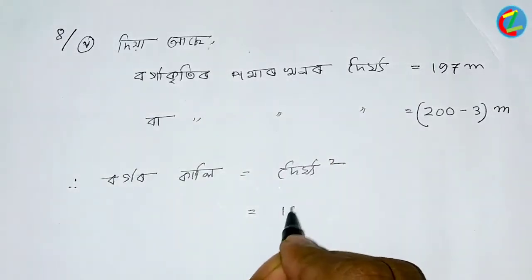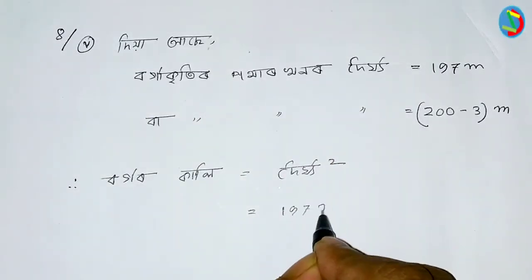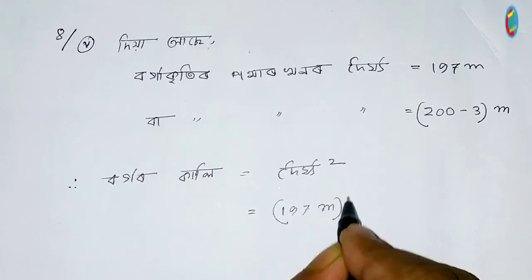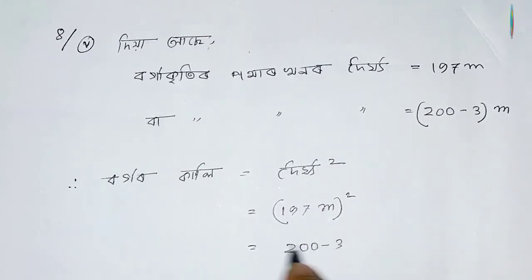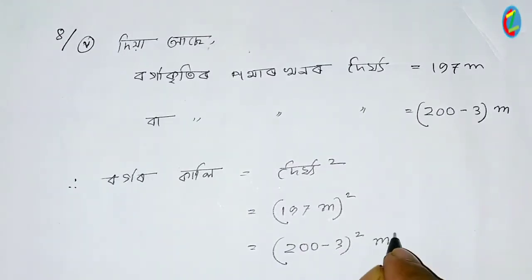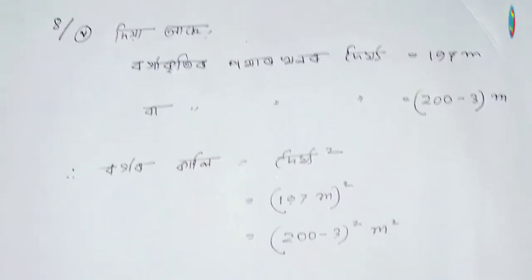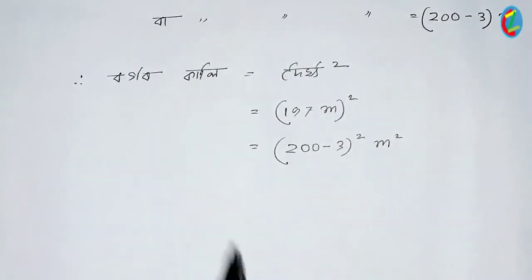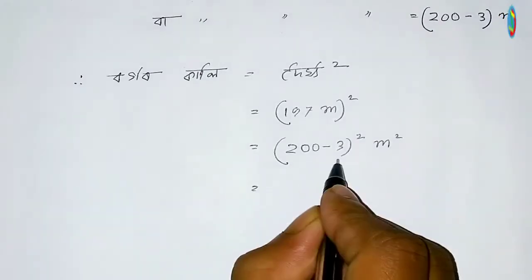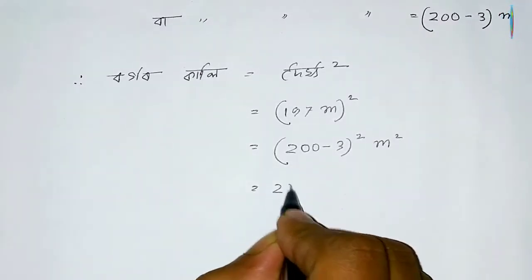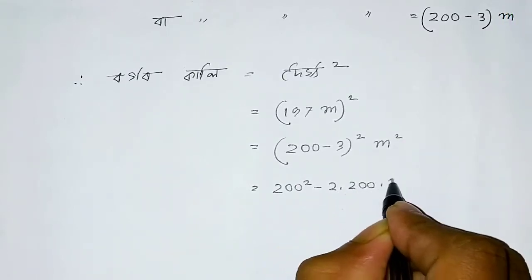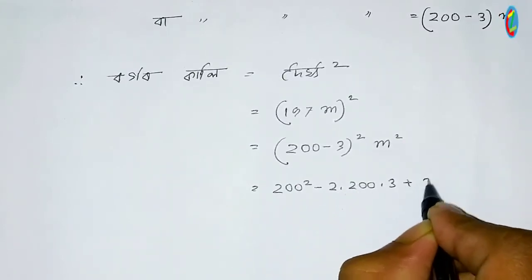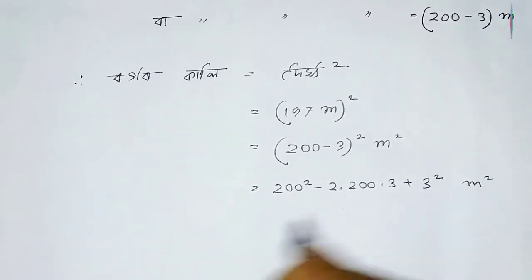Here we can add 197 meters, which means 1.00 meters. So we can add 2.00 meters, which is a frame of 2.00 meters. 2ab is 2 × 200 × 3, and b squared is 3 square meters.